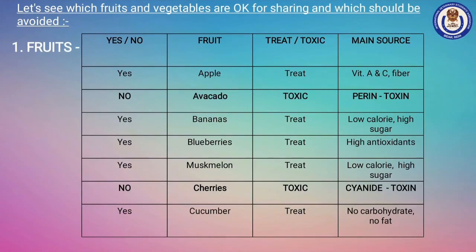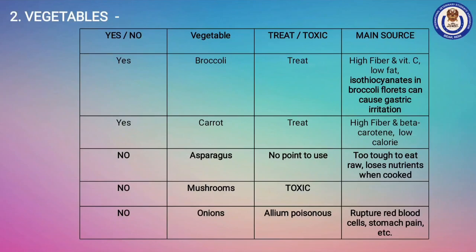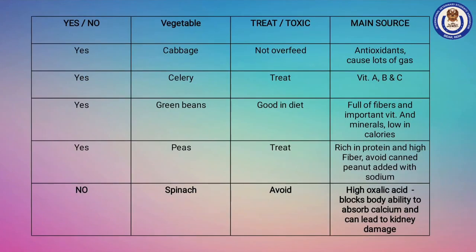Here is a list of fruits and vegetables we can give as treats and some that should be avoided. In fruits, never give avocado — it contains persin toxin. Cherry contains cyanide toxin. Always remove pits and seeds from fruits before giving, as they also contain cyanide. Grapes are the most dangerous fruit, causing acute sudden kidney failure. Tomato contains solanine toxin. In vegetables, never give asparagus, mushroom, onion, or spinach. This is just a small list — a large number of other fruits and vegetables are present in the market. Before adding any of them to your dog's diet, consult your vet.